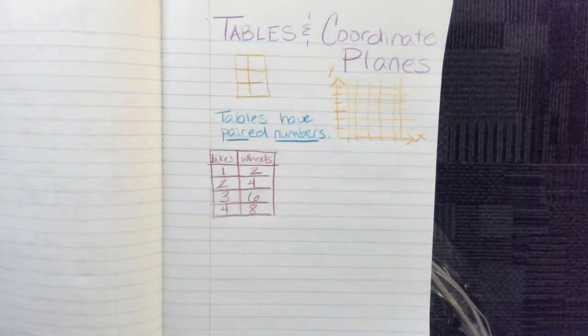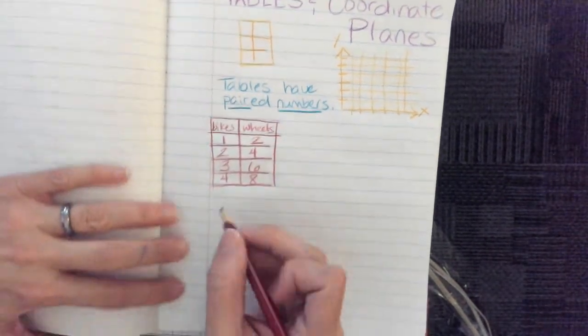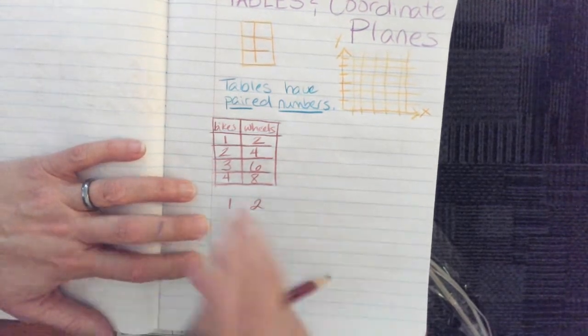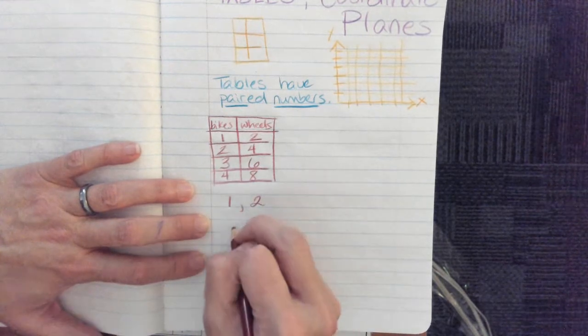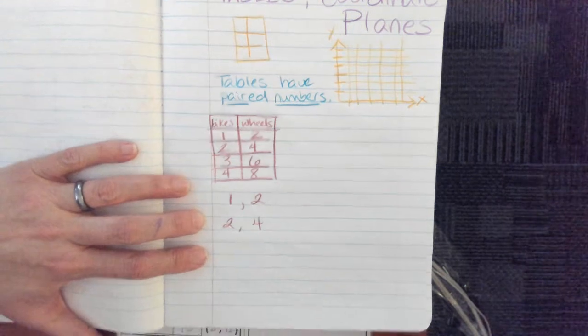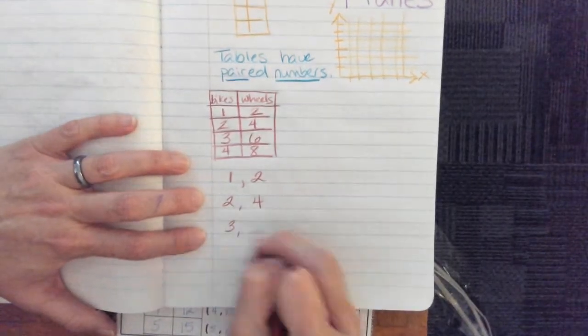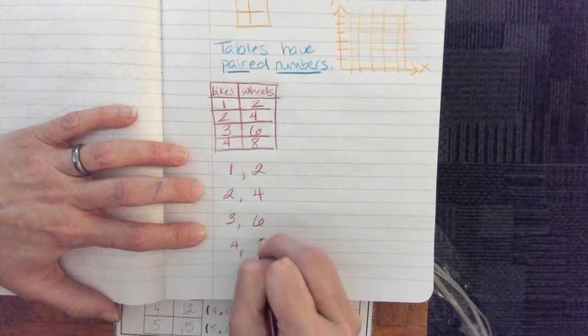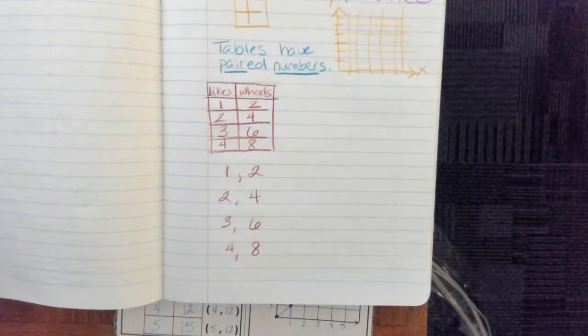So, tables have paired numbers. The number one and two go together. One bike, two wheels. The numbers two and four go together. The numbers three and six go together. And the numbers four and eight go together.